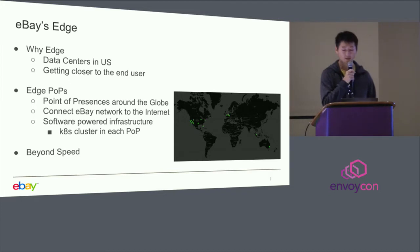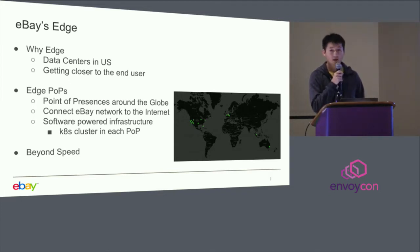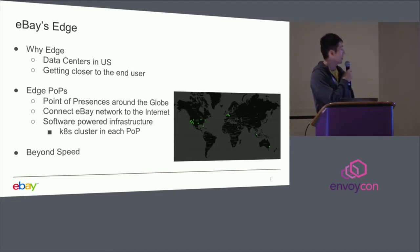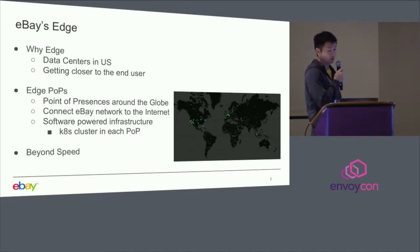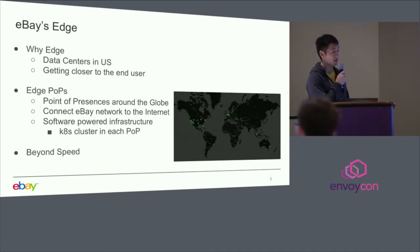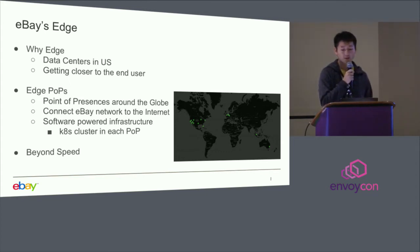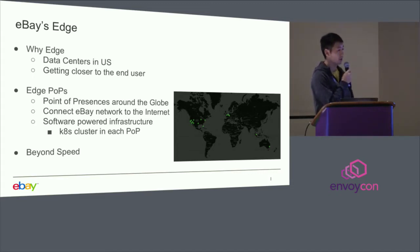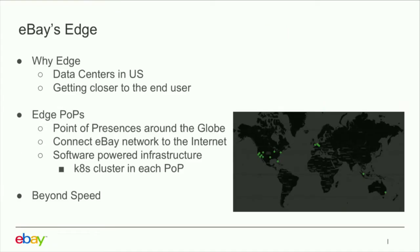The edge is made of a bunch of POPs, or points of presence, deployed around the globe. Networking-wise, it's a location that interconnects eBay's network to the internet. Compute-wise, it has much less footprint than the data center — typically just a few racks of servers. At eBay, we have Kubernetes clusters deployed at each POP. By using Kubernetes as a general-purpose running platform, we run our edge proxy stack there. With edge proxy in the POP, we can terminate SSL connections closer to the end user, saving expensive SSL round-trip latency across continents, which increases page load speed.